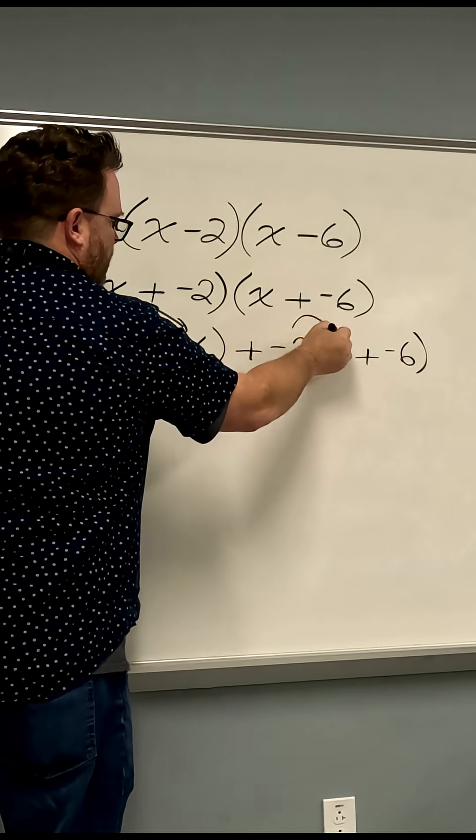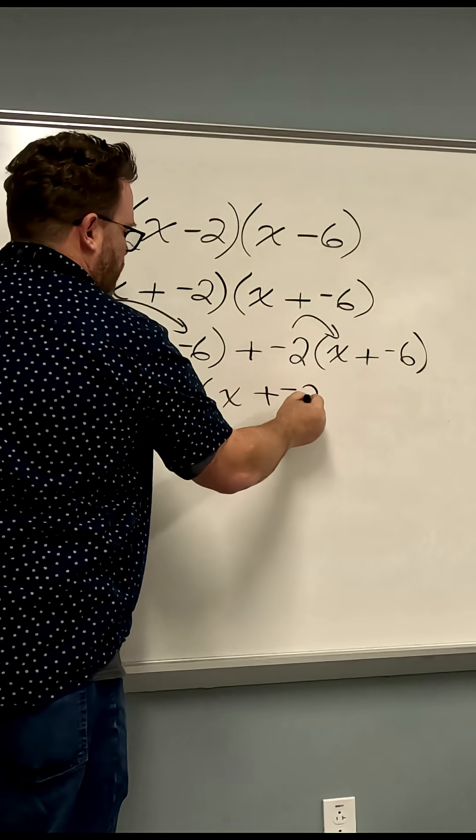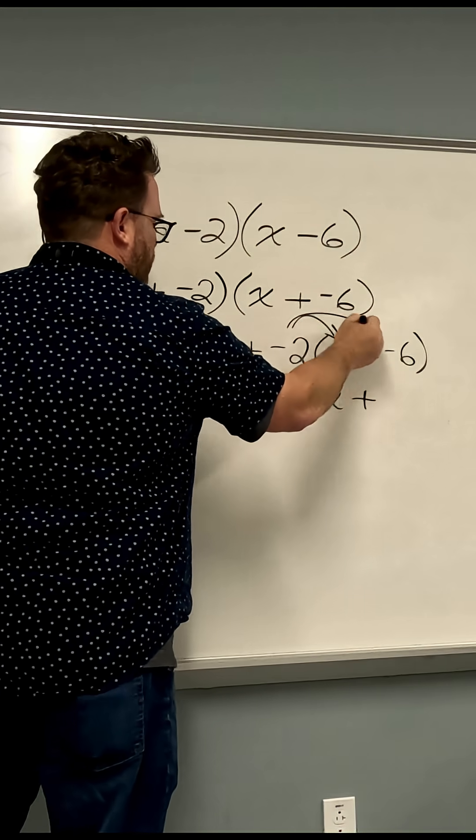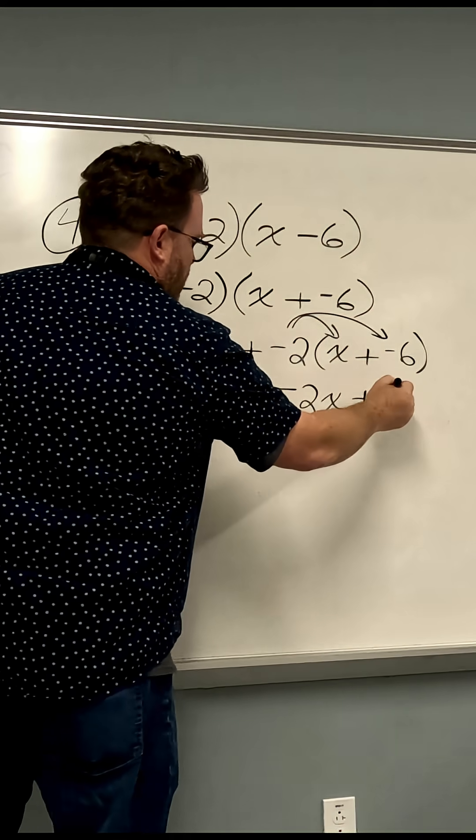Plus negative 2 times x, which is negative 2x. Plus negative 2 times negative 6, which is positive 12.